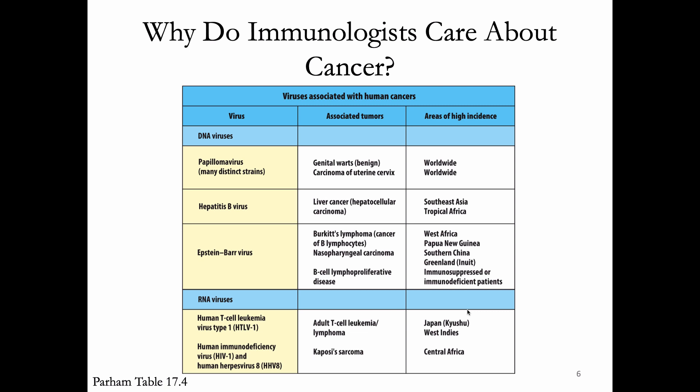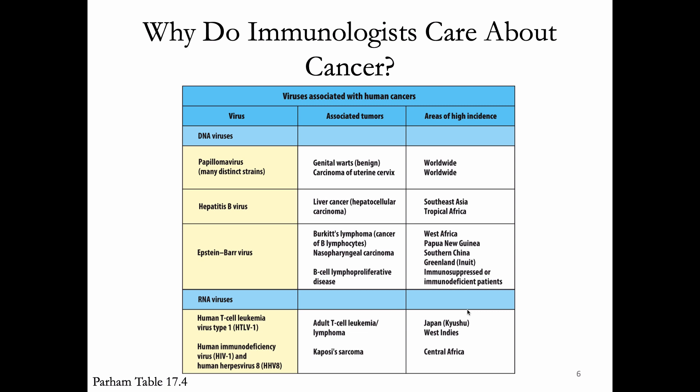Many cancers are pathogen in origin, most commonly viral. Another reason immunologists care about cancer is that many cancer treatments involve radiation and bone marrow transplants. Most cancer therapies mess with the immune system — chemo and radiation wipe out the immune system and require a bone marrow transplant — so immunologists clearly care about those therapies.